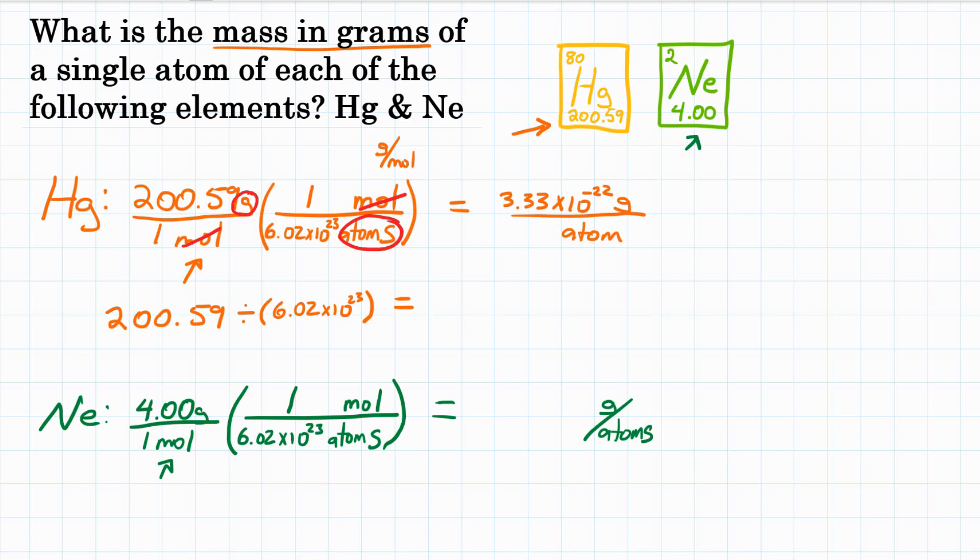So let's plug this in our calculator. 4.00 divided by 1 times 1 divided by 6.02 times 10 to the 23rd. I'm going to put this in parentheses so we know that all stays together, equals, and we get 6.64 times 10 to the negative 24th. So again, a very, very, very small number of grams.